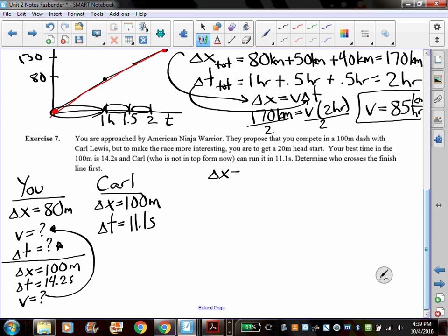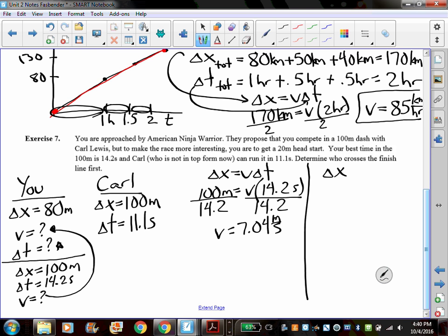So we'll use algebra. We'll use delta x equals v delta t. And we've got 100 meters equals whatever your velocity is times 14.2 seconds. So if we divide both sides by 14.2, we end up getting that your velocity is going to be 7.04 meters per second. So now if we go back to your race against Carl, in your race against Carl you are going to go 80 meters and you will run it at 7.04 meters per second. And let's see if we can find out what that change in time is going to be. Is it greater than 11.01 or is it less than 11.01?